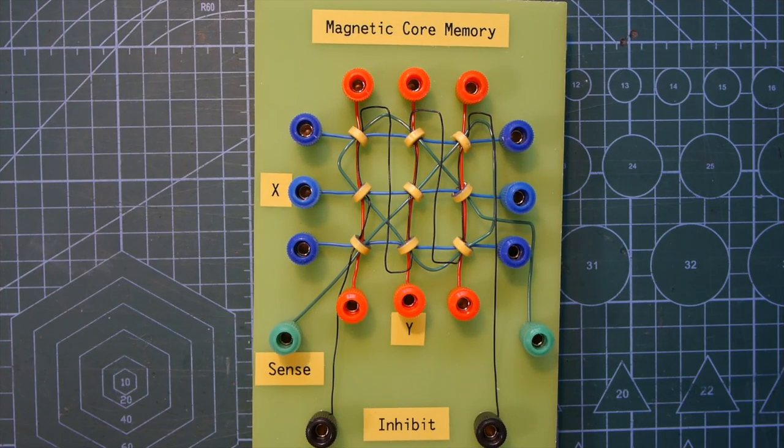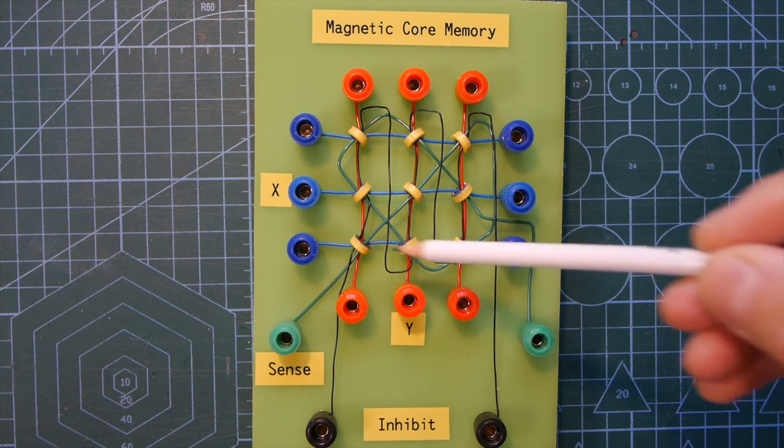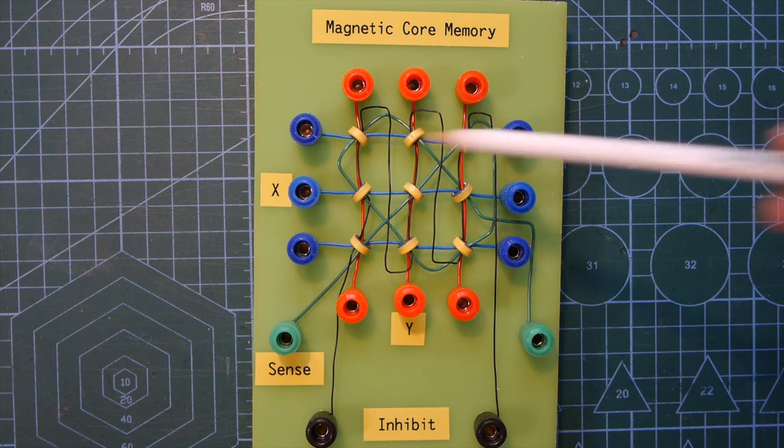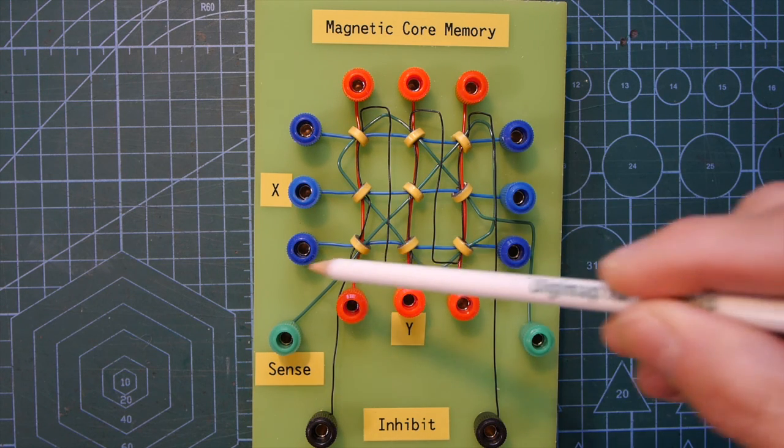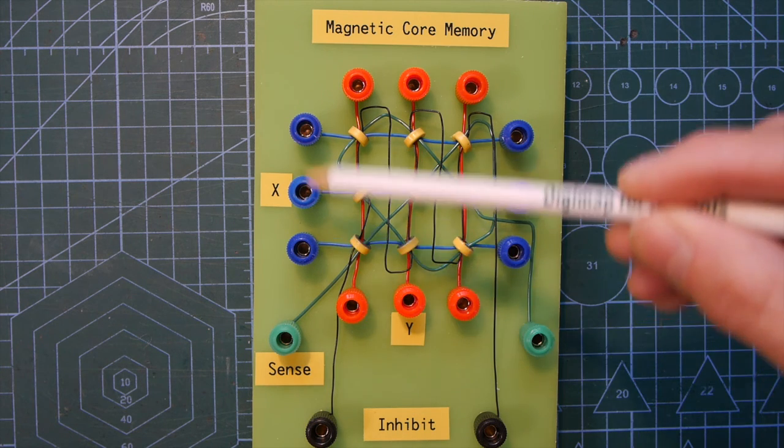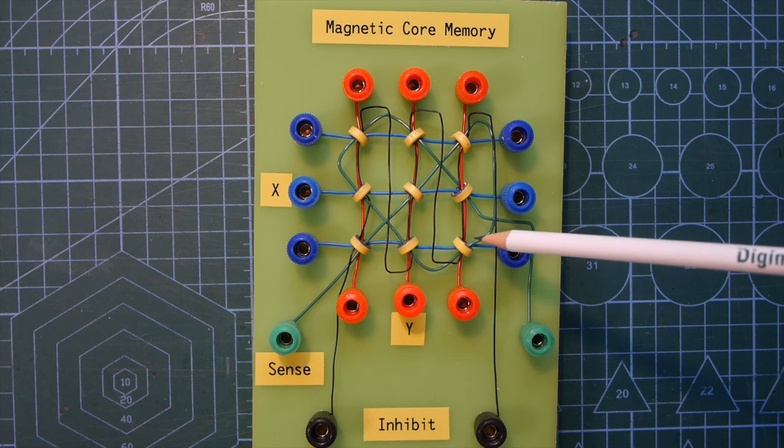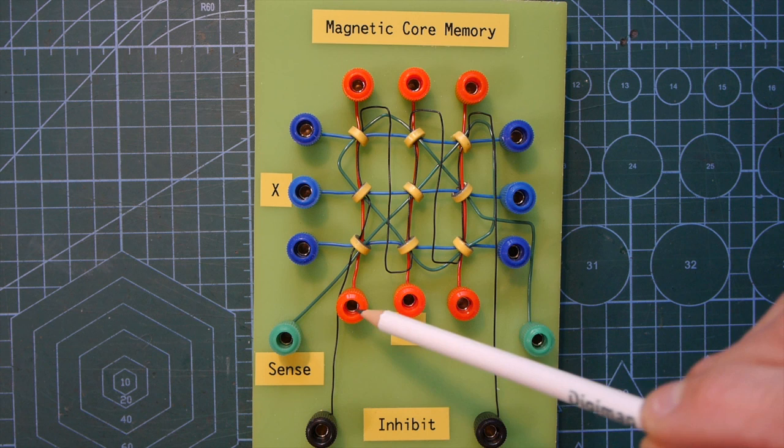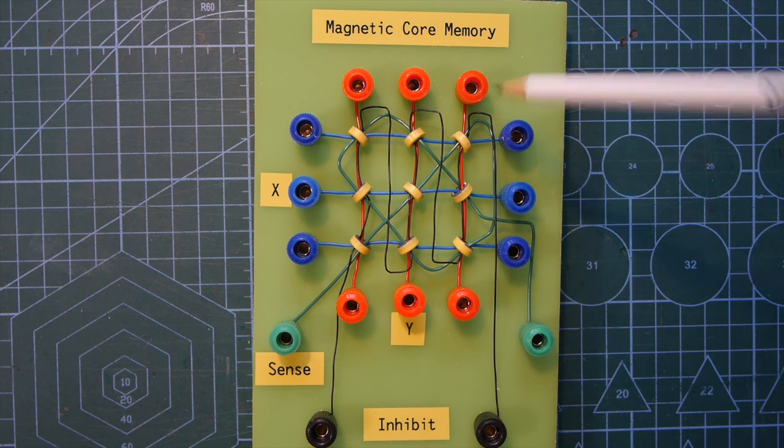So, let's just have a quick look at the layout of the little board that I've made. I've got nine little toroids here, the ferrite cores in a little grid, and I've passed various wires through them. So, to start off with, we've got the blue wires that go through like that in each row, and it's confusing, isn't it, because you go up here, but these are X wires because they address cores in the X direction.